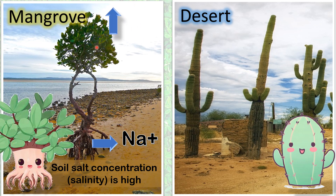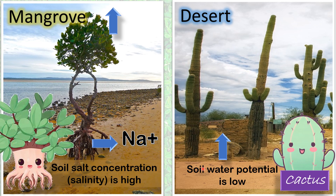Now let's look at the xerophytes. An example of xerophytes is the cactus. They live in the desert, which is exposed to intense sunlight. Sunlight promotes evaporation of water from the soil, so the desert soil has low water potential. Added to that, the cactus itself will lose water due to transpiration.